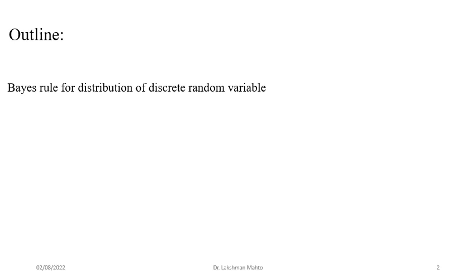Coming to the outline of today's lecture: first, we will state Bayes rule for distribution of discrete random variables and discuss a few examples related to that. We will discuss it in detail, and if time permits, we will go on to discuss conditional expectation.